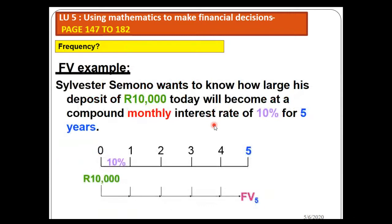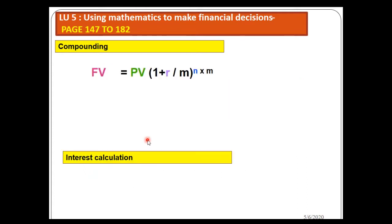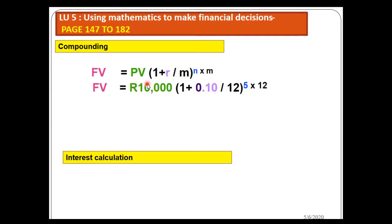Let's look at an example. How much will I have after five years if I invest 10,000 today, compounding interest monthly — meaning 12 times a year — at a rate of 10% for five years? I've been given the present value and I'm looking for the future value, but I need to be careful because the frequency has changed. I receive interest 12 times a year, so m equals 12. In the formula: 10,000 times one plus 0.10 divided by 12, to the power of 5 times 12.